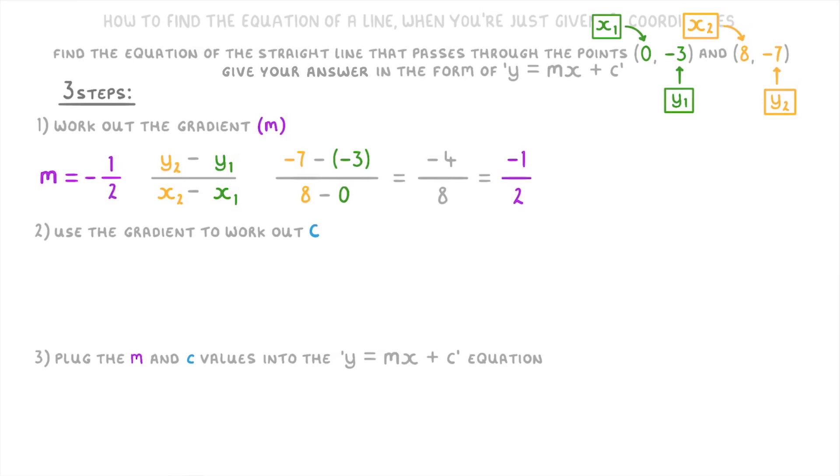Next you can use the -1/2 that we just found as m and one of the coordinates, for example (0, -3) as your x and y, and plug them all into the equation y = mx + c to find out the unknown value of c. So that will give us -3 = -1/2 × 0 + c.